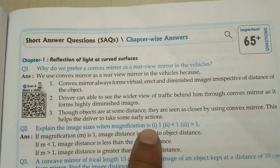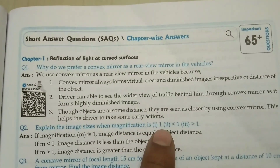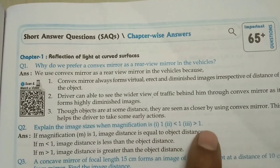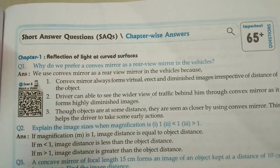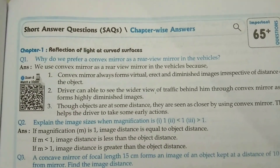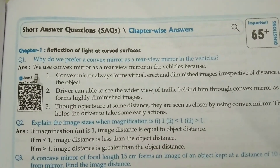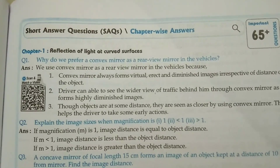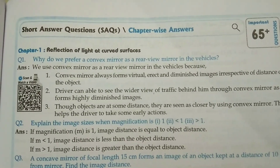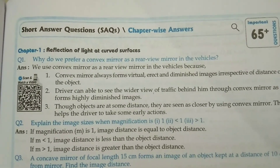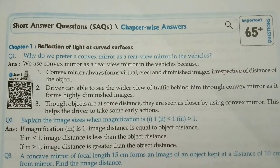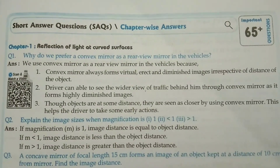Explain the image size based on magnification: When magnification equals 1, image distance is equal to object distance. When magnification is less than 1, image distance is less than object distance. When magnification is greater than 1, image distance is greater than object distance.